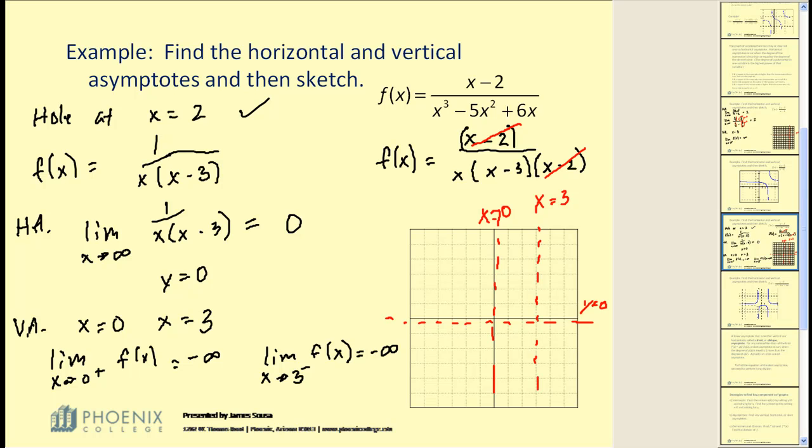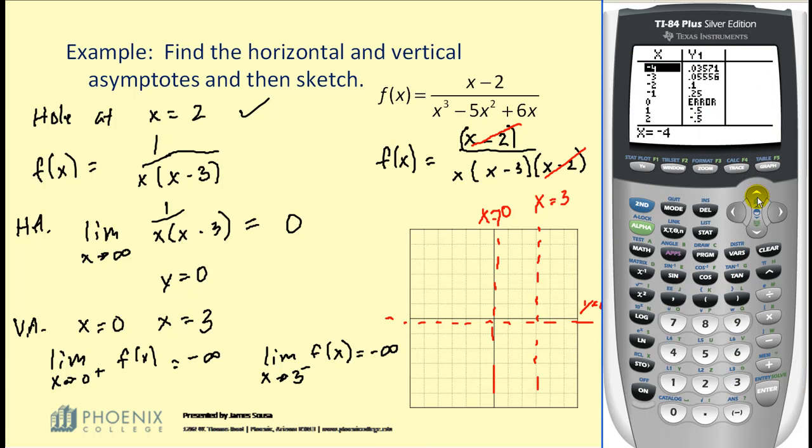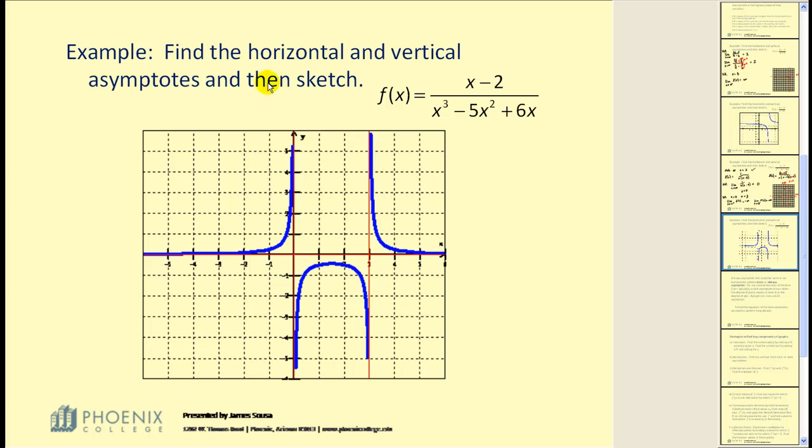Now, to make a complete graph, we do need to go back to the calculator and find some additional points. Again, by hitting second graph, we can scroll up and down here and try to find some points that would be easy to plot and make a nice, accurate graph. I've already graphed this function using different graphing technology. So let's go ahead and take a look at that. Here it is. Again, here we have a vertical asymptote, x equals zero, x equals three, horizontal asymptote y equals zero. Now, the one thing that we have to add in here, remember there was a hole at x equals two. It's not showing on this graph. So what we have to do to make an accurate graph is go here to the value where x equals two, and we should have an open circle to show there is a hole in that graph there.